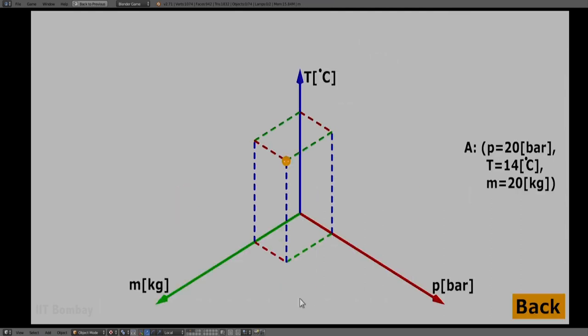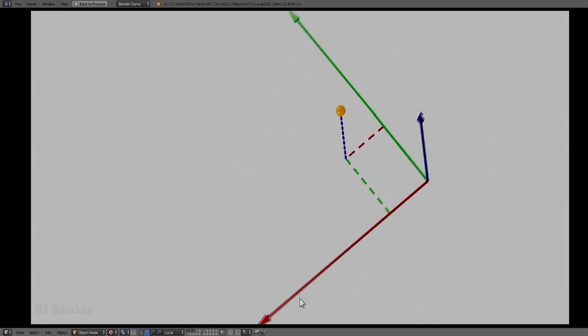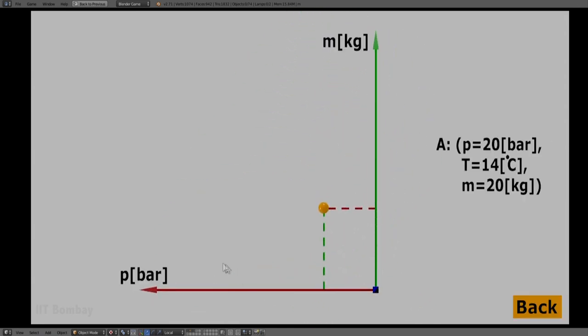The third possibility is the pressure-mass projection. Here, you will notice that the two axes which remain are pressure and mass. Thus, the temperature axis does not get represented.